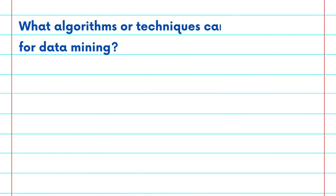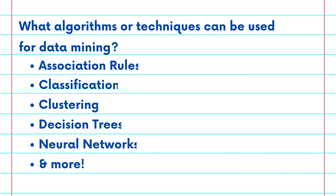There are various algorithms and techniques that allow you to convert these large amounts of data into useful outputs. These techniques include association rules, classification, clustering, decision trees, neural networks, and more.